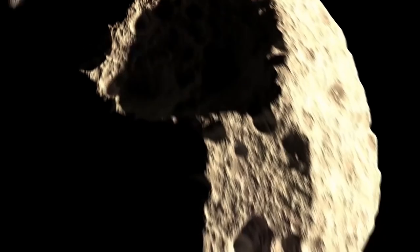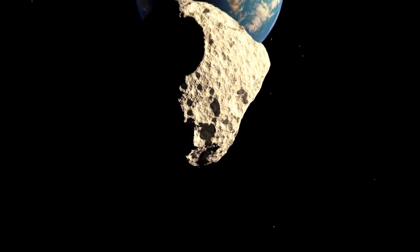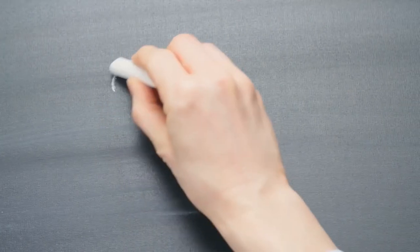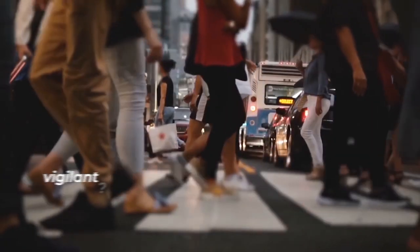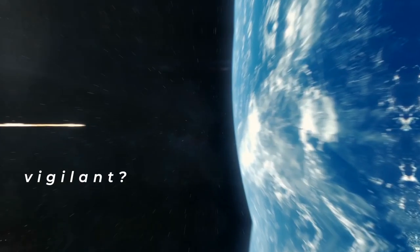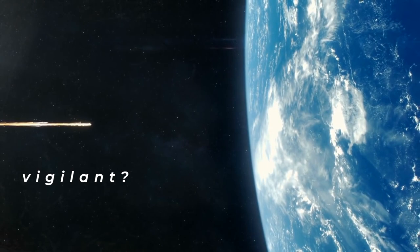Asteroid 2021 GW4 flew past Earth without incident. But was it just a harbinger of things to come? Is that just the universe's way of telling us to remain vigilant? A friendly reminder that at any moment some little rock could completely change the fate of our world?